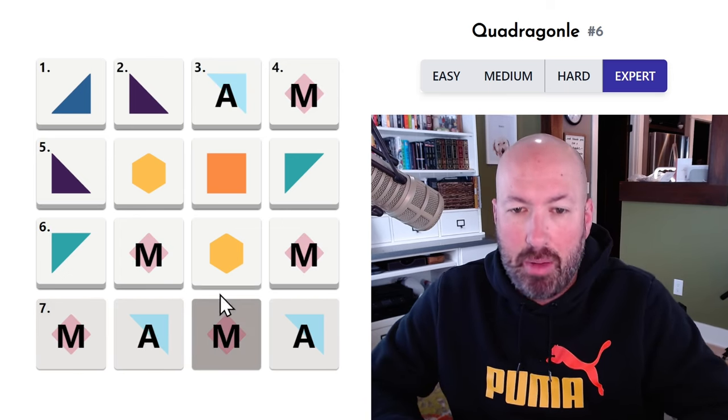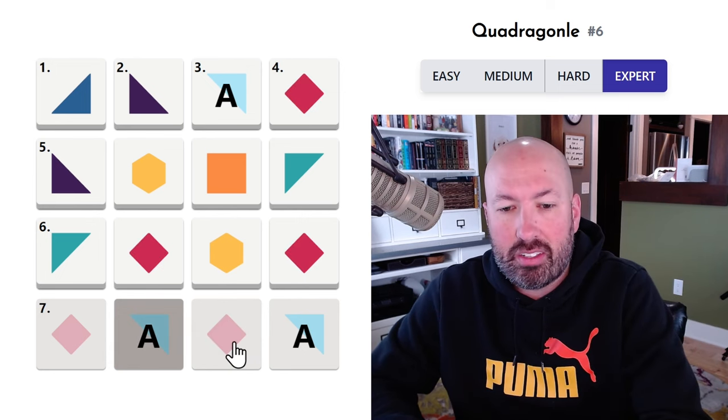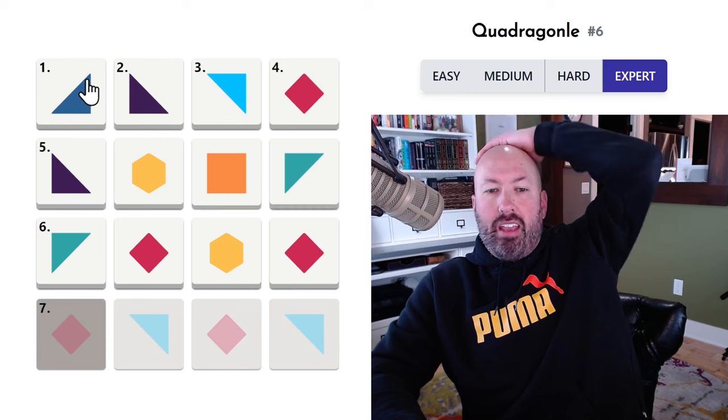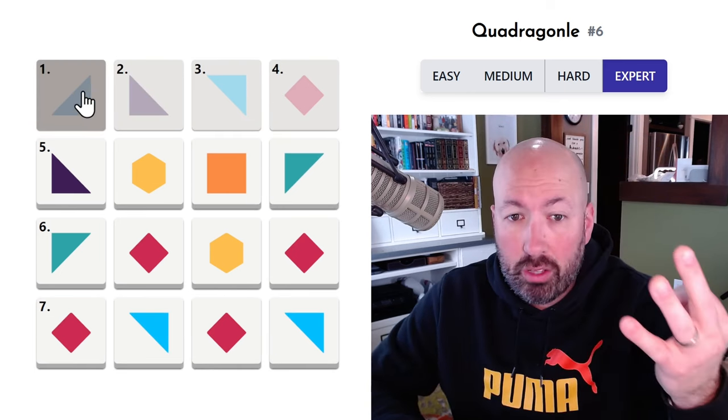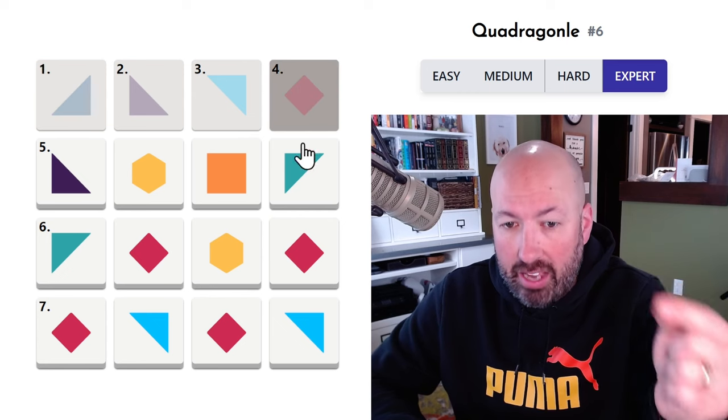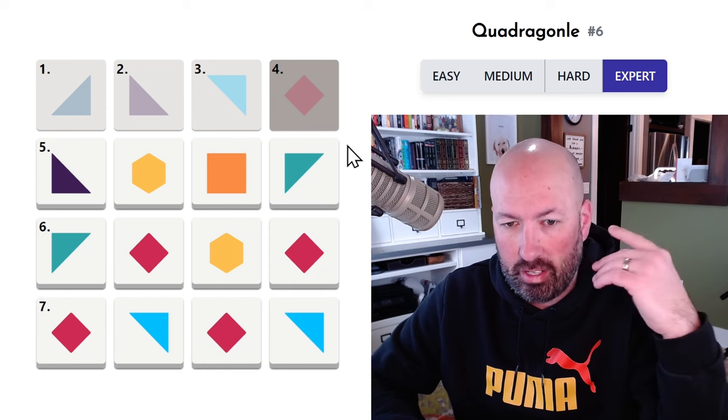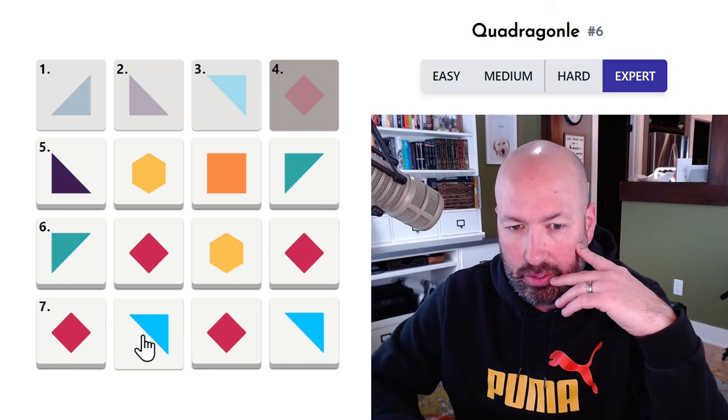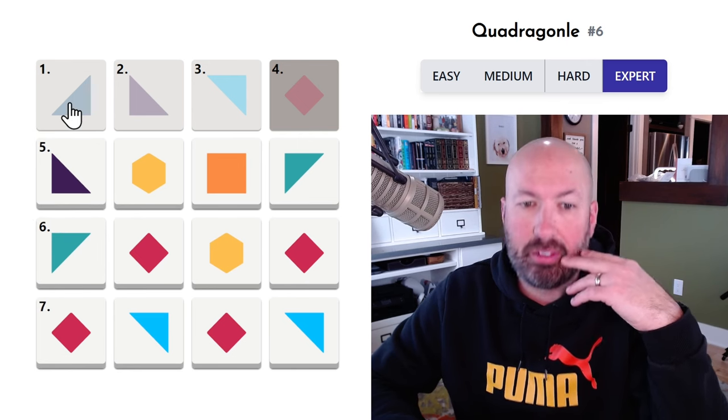So again, something like mama would work, but then you'd have to do, oh, and look, it's the same. Okay. Right. So the first column and the first row, three of the four letters are the same. The last column and the last row, three of the four letters are the same. Just in different spots. It's the second letter that's different on the last column and row. The third letter that's different on the first column and row. Wow. Okay.